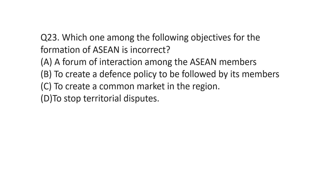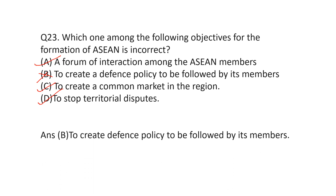Question number 23: in the ASEAN context, which objective is correct? The first option — a forum of interaction among ASEAN members — is absolutely correct. The second — to create a defence policy to be followed by its members — is incorrect, as ASEAN did not make a defence policy. The third — to create a common market in the region — was an ASEAN objective. The fourth — to stop territorial disputes — was also a motive. So the correct answer is B: creating a defence policy was not an ASEAN objective.